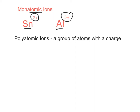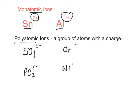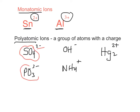But there are a lot of ions called polyatomic — more than one atom. For instance, SO4 2-, or PO3 3-, or OH-, or NH4+, or Hg2 2+. These are all a group of atoms that have a charge.